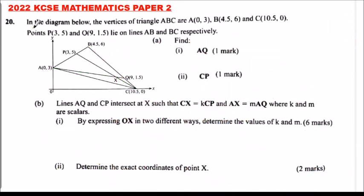This is the 2022 KCSE Mathematics Paper 2, Question 20. In the diagram, the vertices of triangle ABC are A(0, 3), B(4.5, 6), and C(10.5, 0). Point P is at (3, 5) and Q is at (9, 1.5), lying on lines AB and BC respectively. Part A asks us to find vector AQ.